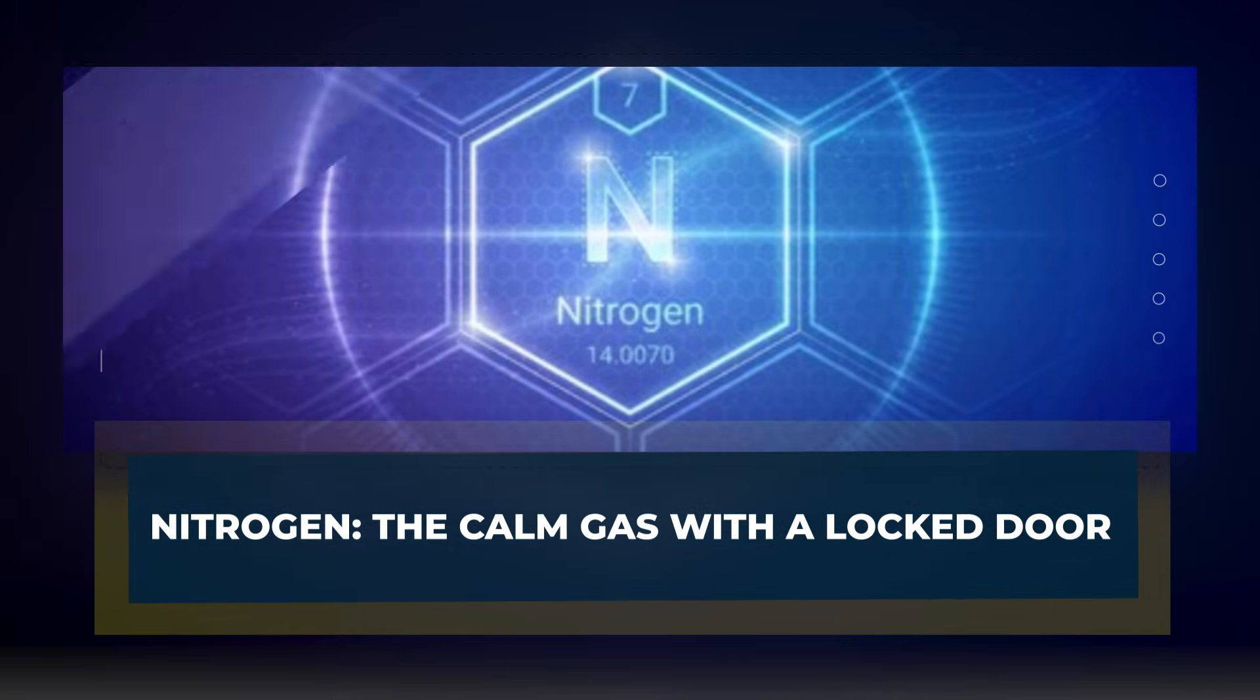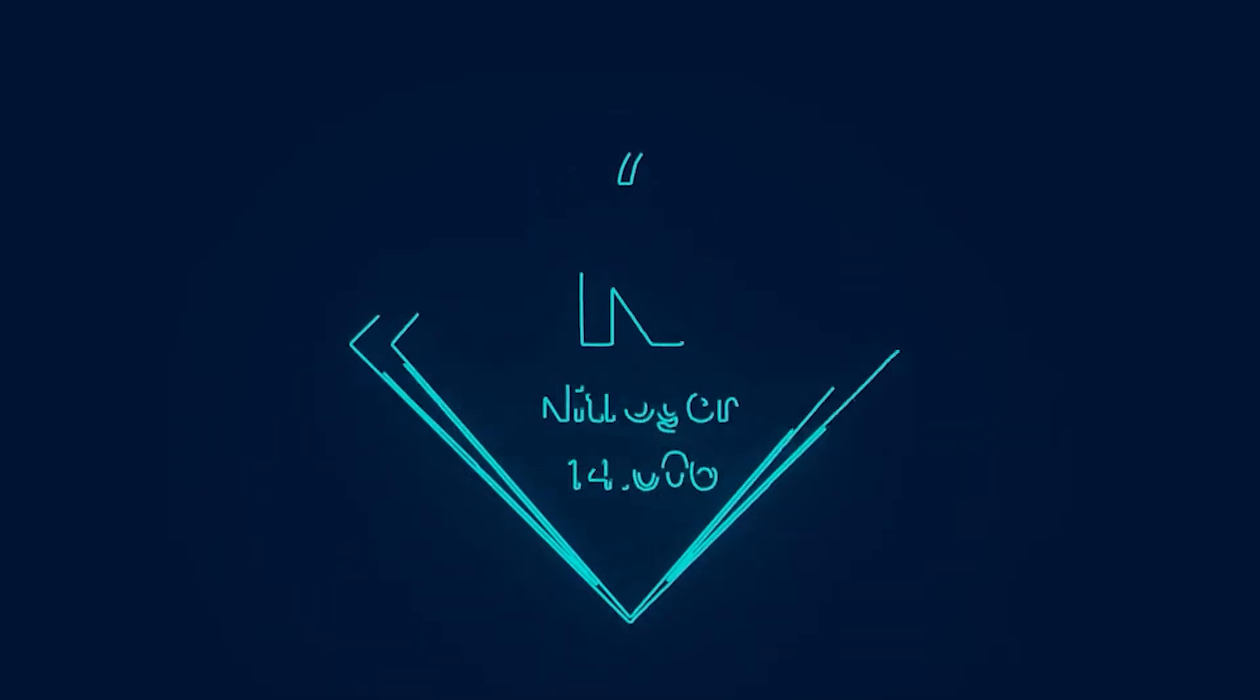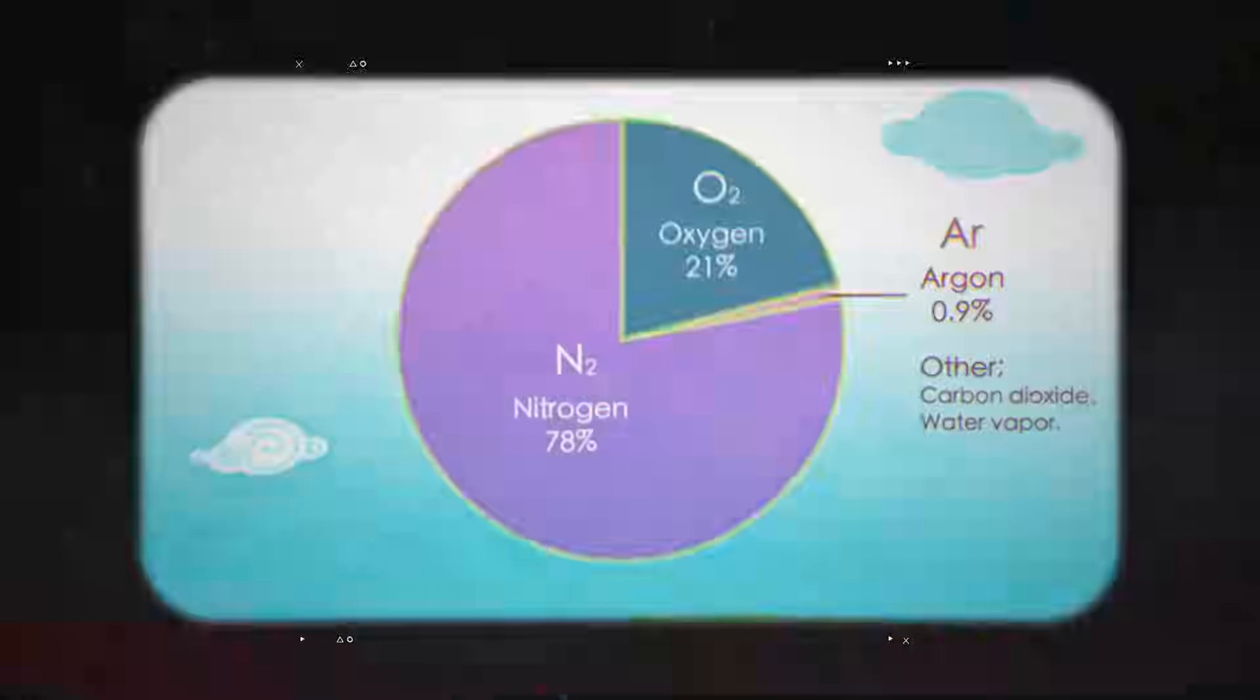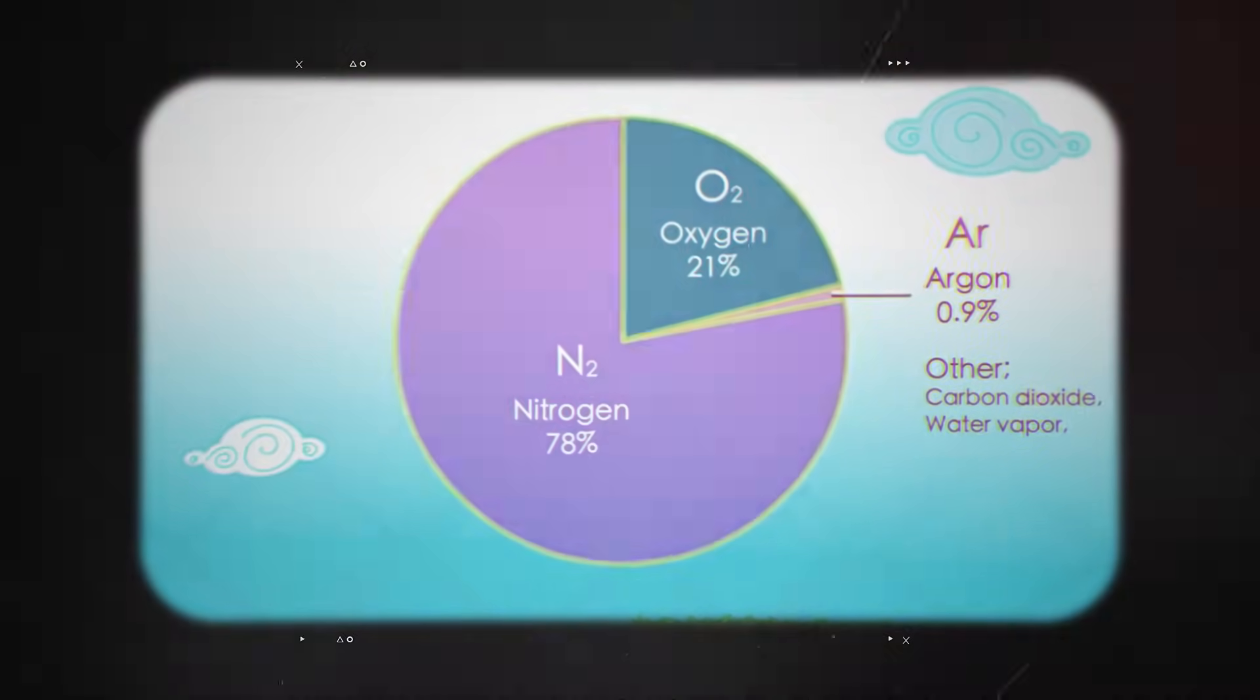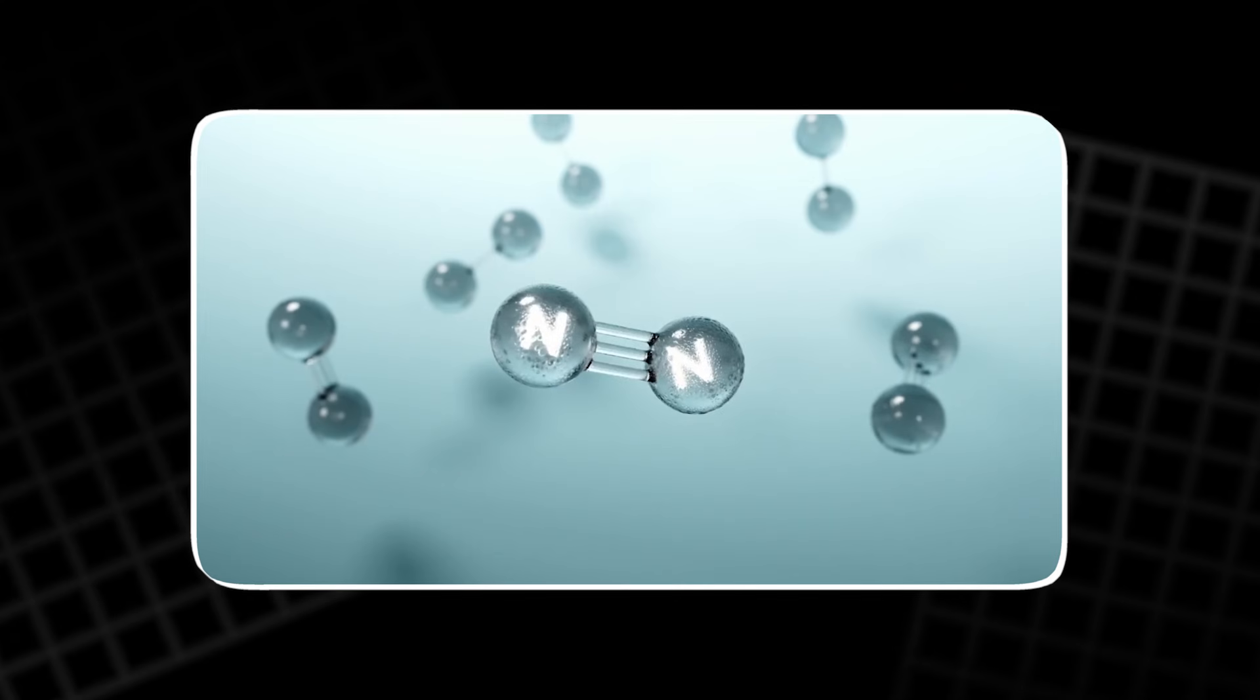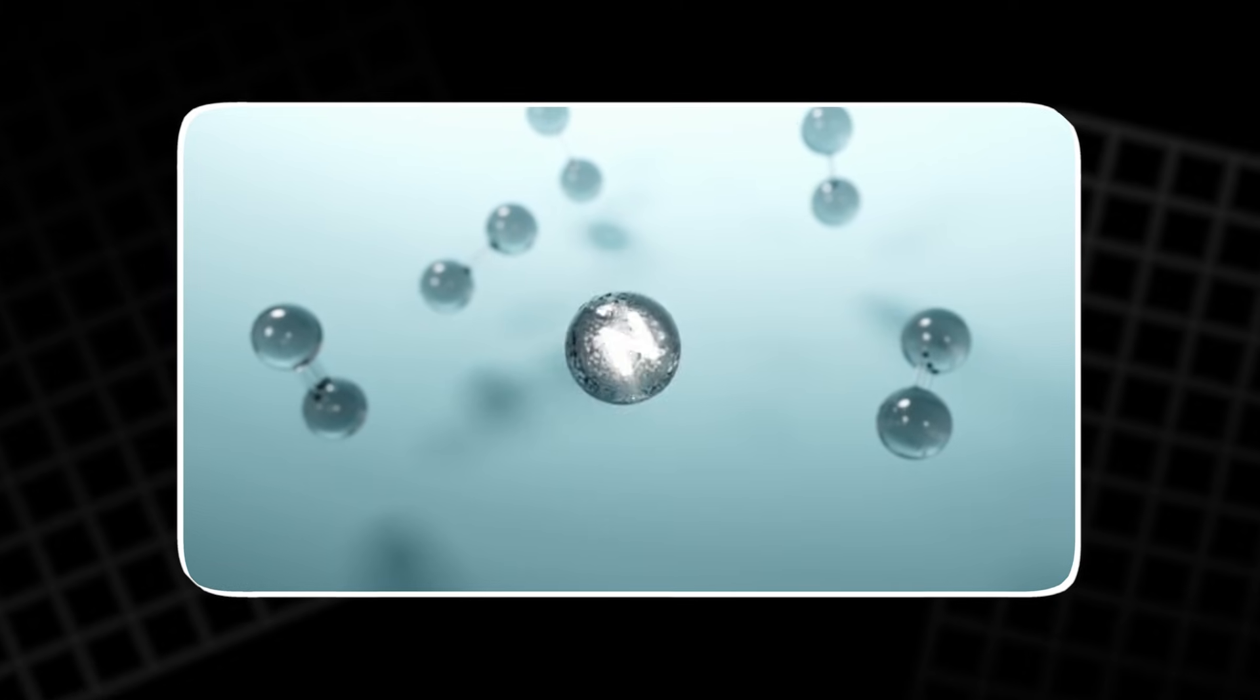Nitrogen. The calm gas with a locked door. Nitrogen is everywhere and easy to ignore. Every breath you take is mostly nitrogen. Earth's air is about 78% nitrogen and almost all of it is N2, a molecule made from two nitrogen atoms.